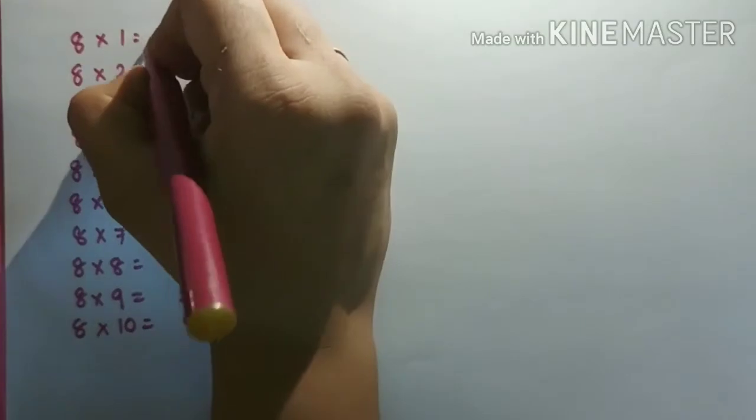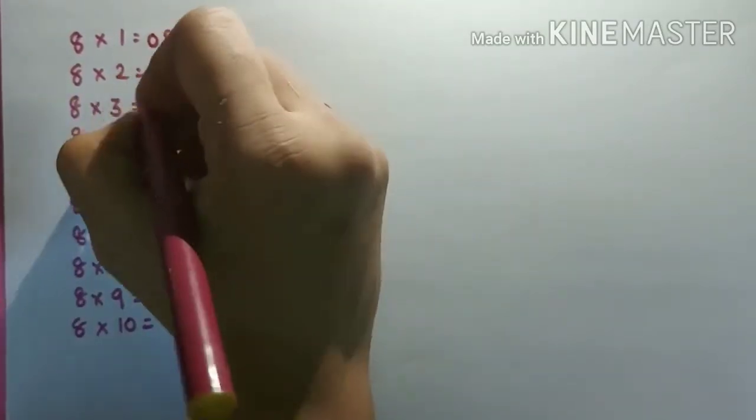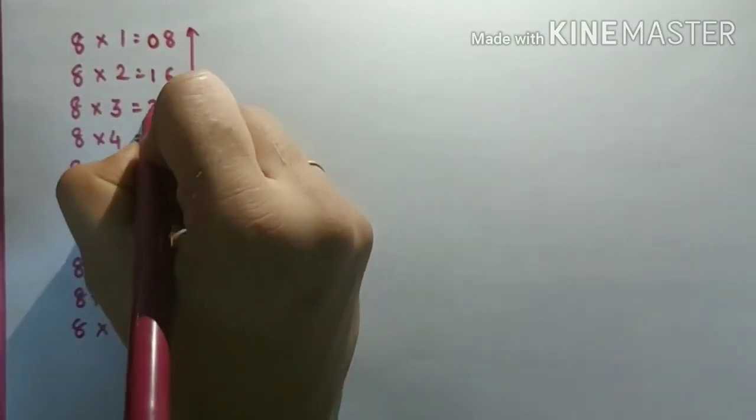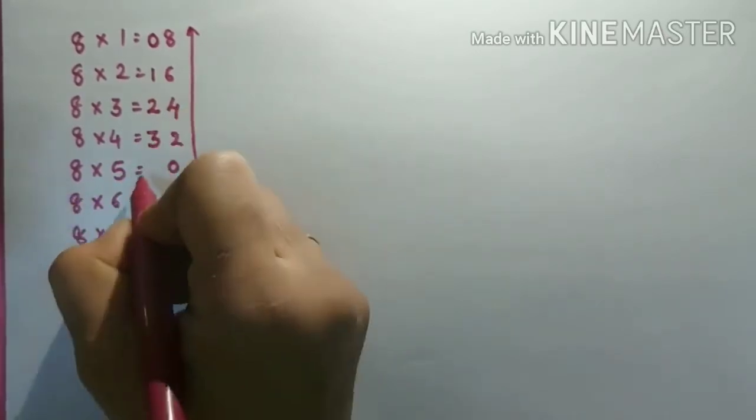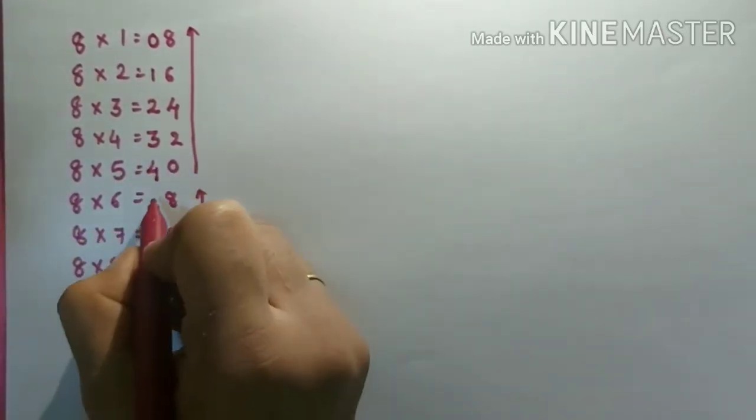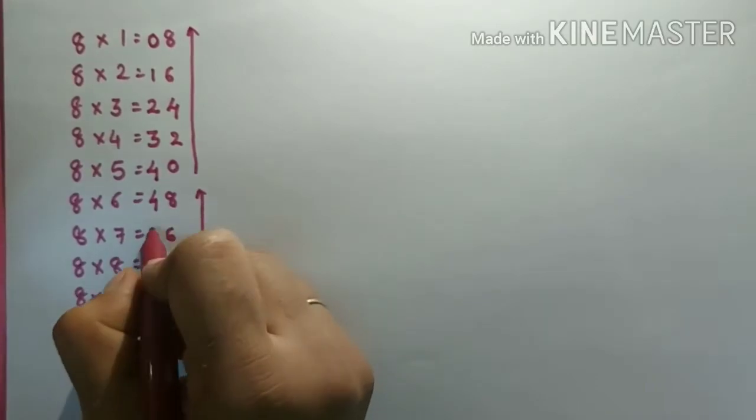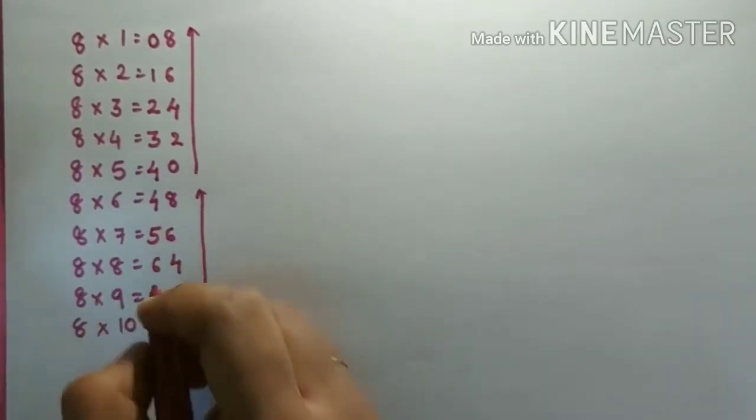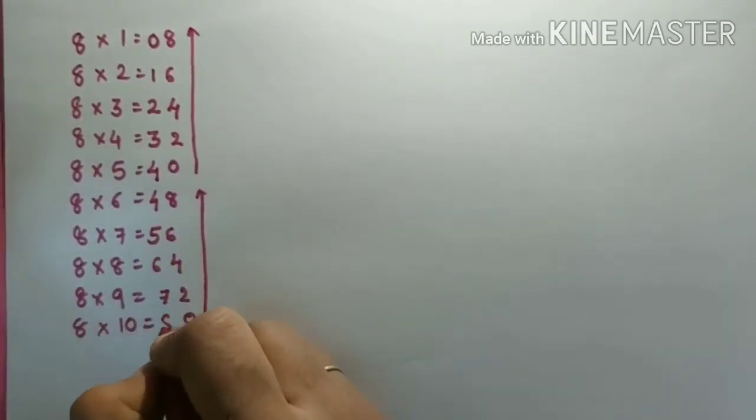And after that, here on the tens place, 0, 1, 2, 3, 4. Again repeat 4, same number 4, 5, 6, 7 and 8.